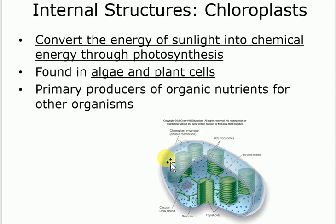This process is photosynthesis — found in algae and plants. Plants have chloroplast, which is why plants are green; that's the color of the chloroplast. Algae are not plants, but they act like plants in one aspect: they can also perform photosynthesis.